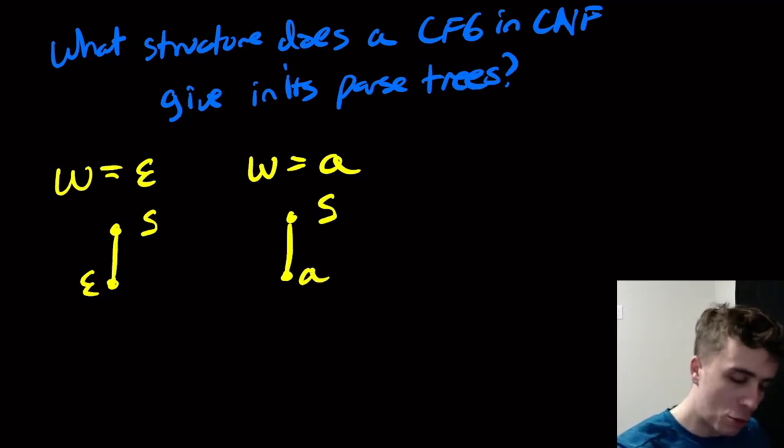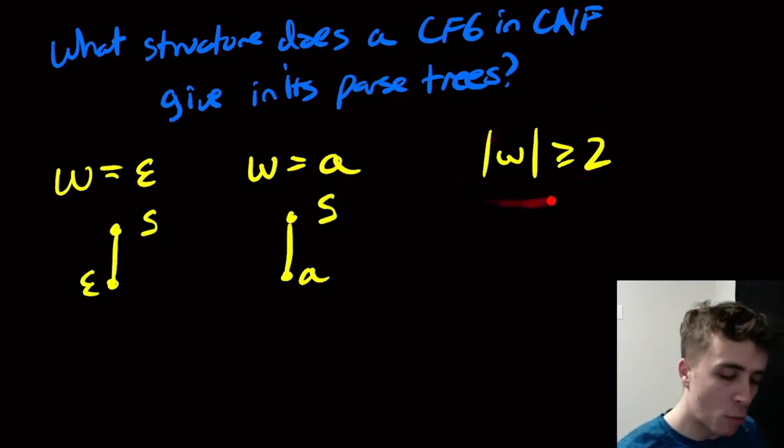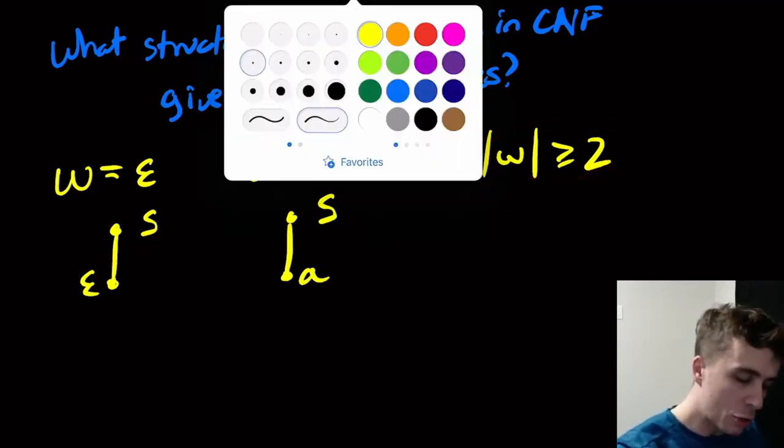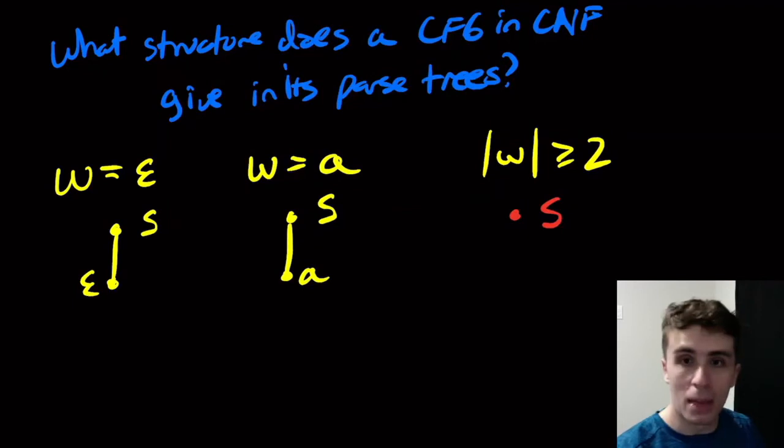And I think now I'm going to look at the case where the length of w is at least two. Because then you have to apply any rule where you produce two variables. And once the length of w is at least two, it gets more interesting.